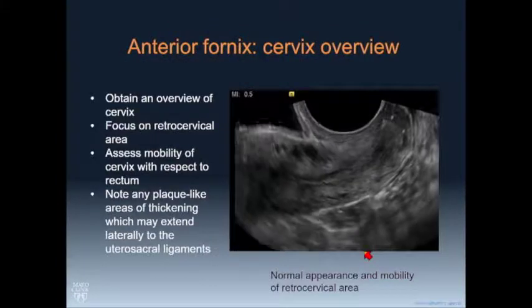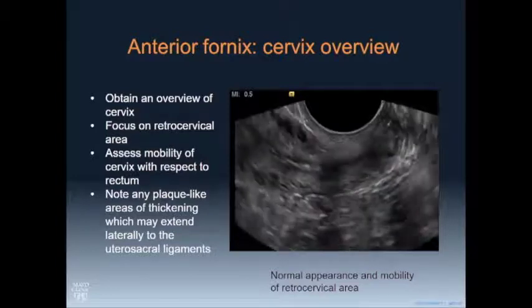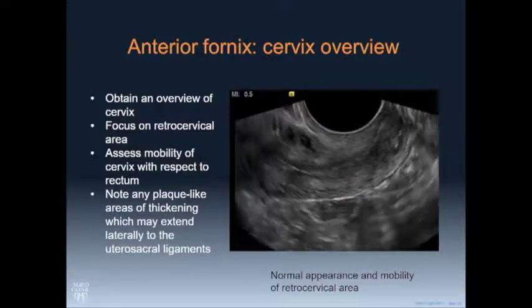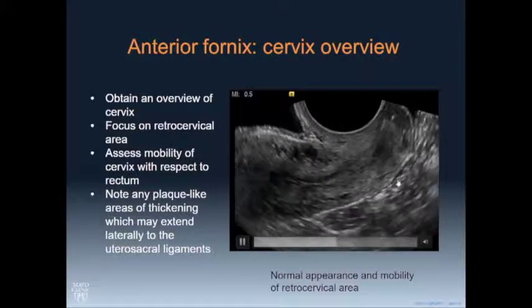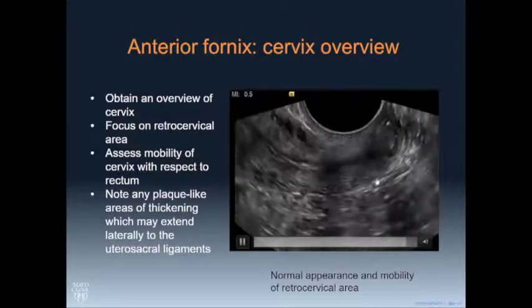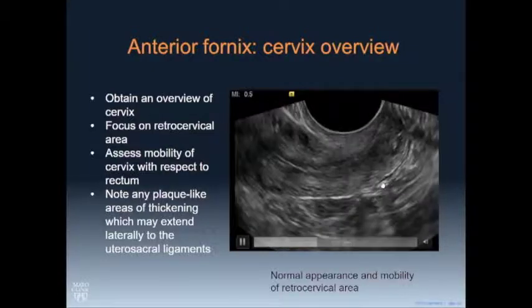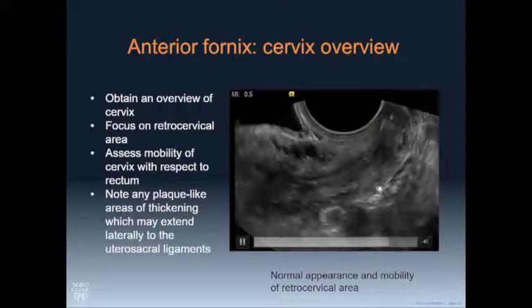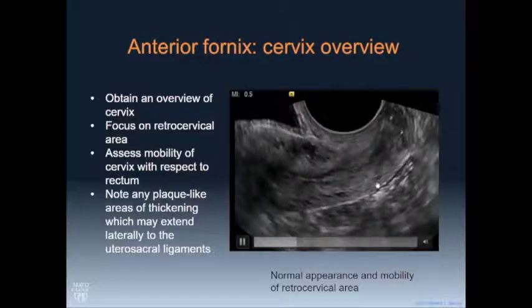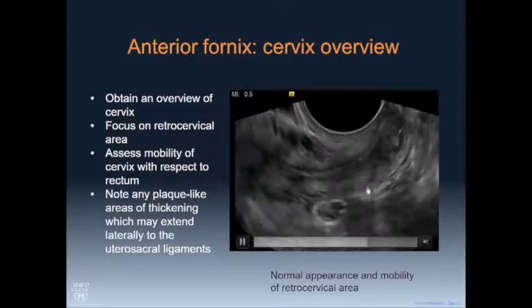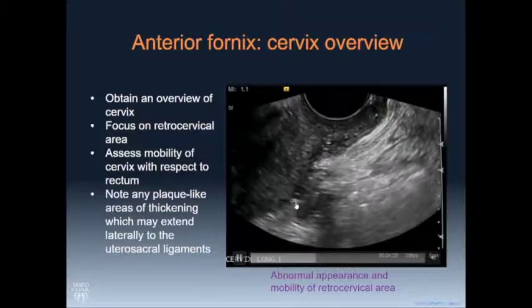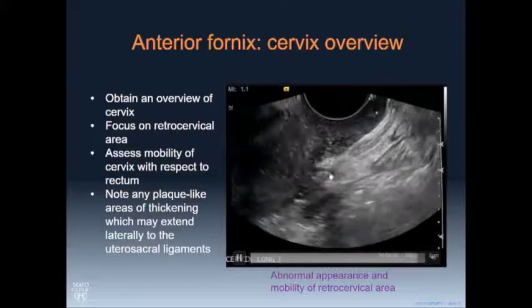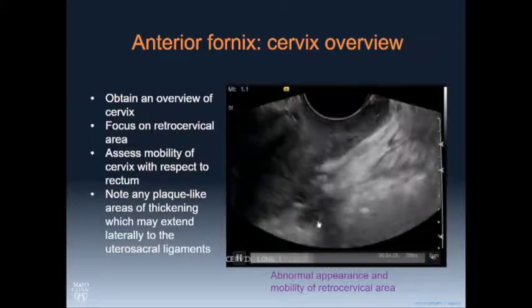This important overview is called the sliding sign. We want to see tissue slide freely from the back of the uterus — this is called the torus uterinus, where the utero-sacral ligaments come and meet in the midline, an important location for deep endometriosis. This next one shows an abnormal sliding sign — there's an implant, and you can see that the tissue just doesn't move.